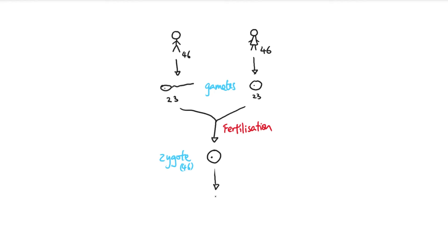The question is how does a single cell actually do that? This single cell needs to divide many, many times — essentially cloning itself — to become a ball of cells called an embryo. This process is called mitosis, a type of cell division that produces two genetically identical daughter cells. Later you'll learn about meiosis, a second type of cell division that makes four genetically different daughter cells, which is how adults make gametes. But for this video we'll focus on mitosis.